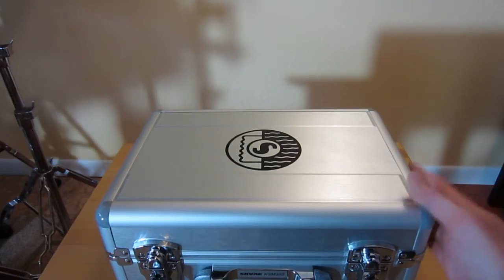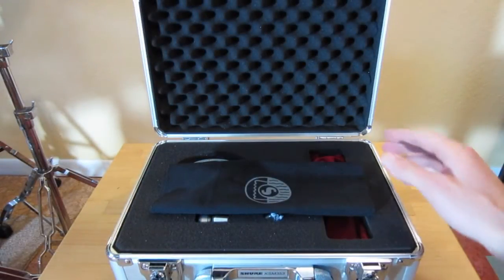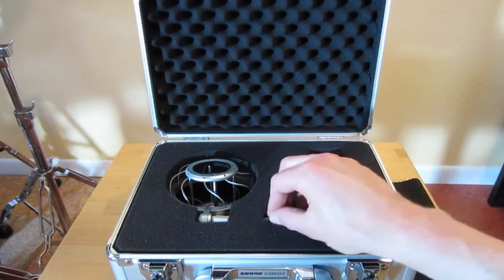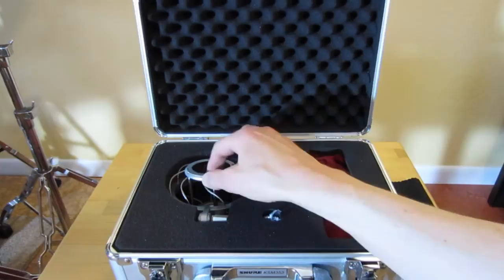The first thing you'll see is that they've updated the case to a standard Shure padded flight case. When you open it up, what you see is a polishing cloth, and then there is the European thread adapter for European mic stands.